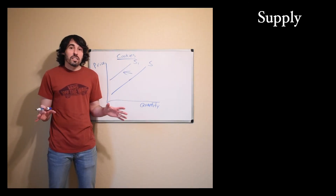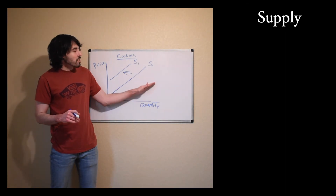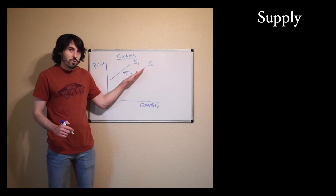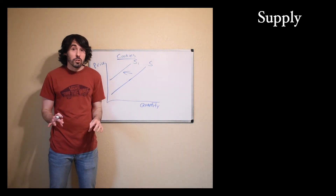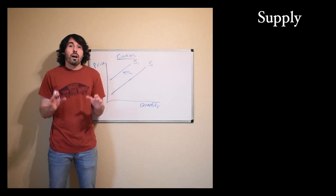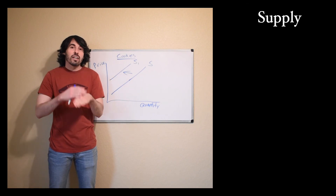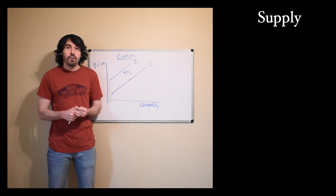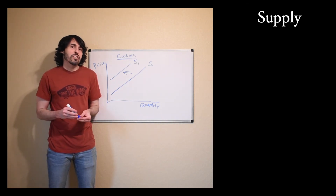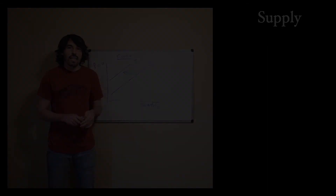So this has been the supply curve video — the things outside of price that cause supply to increase and shift to the right, or decrease and shift to the left. Remember, don't say up or down. On my next video, we're going to put supply and demand together and start seeing how prices are set and what causes changes in prices. Goodbye children.